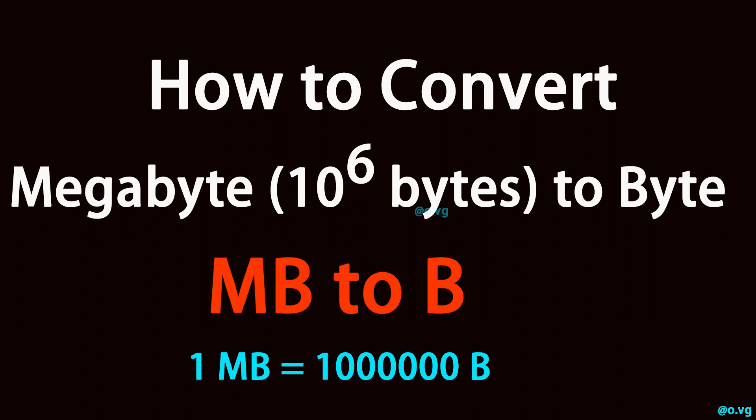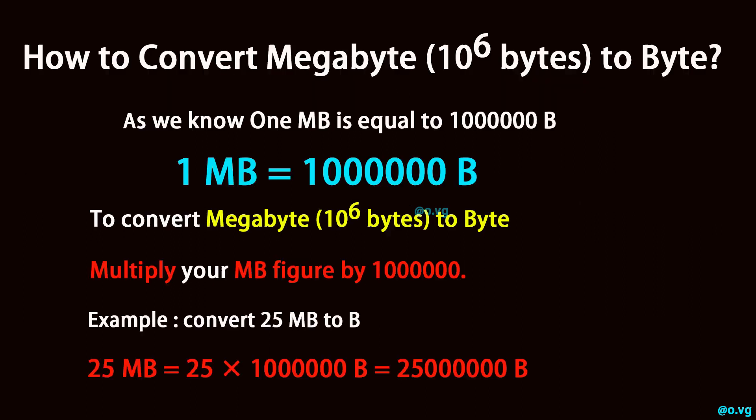How to convert megabyte (10^6 bytes) to byte? One megabyte (10^6 bytes) is equal to one million bytes. To convert megabyte (10^6 bytes) to byte, multiply your megabyte (10^6 bytes) figure by one million.